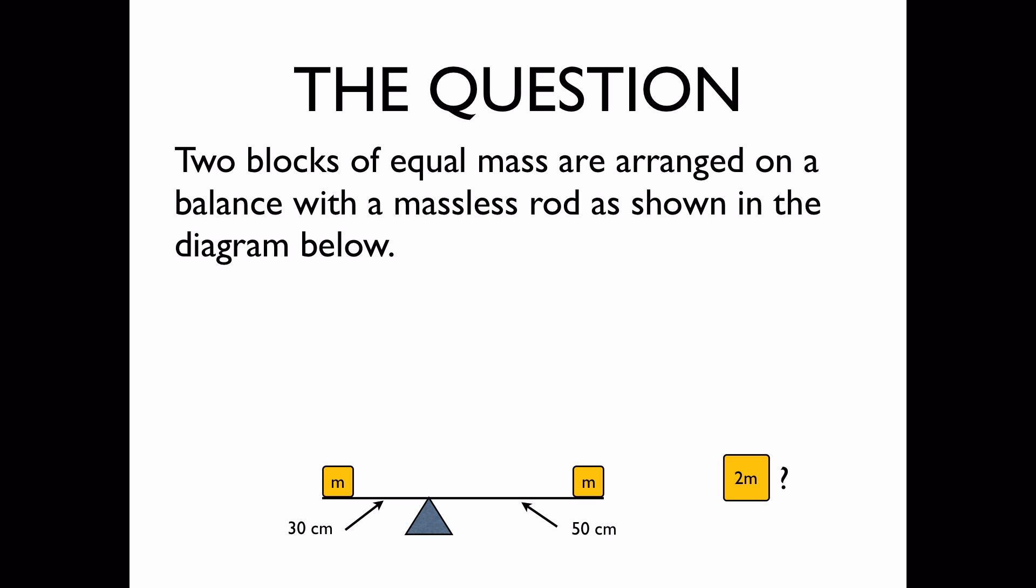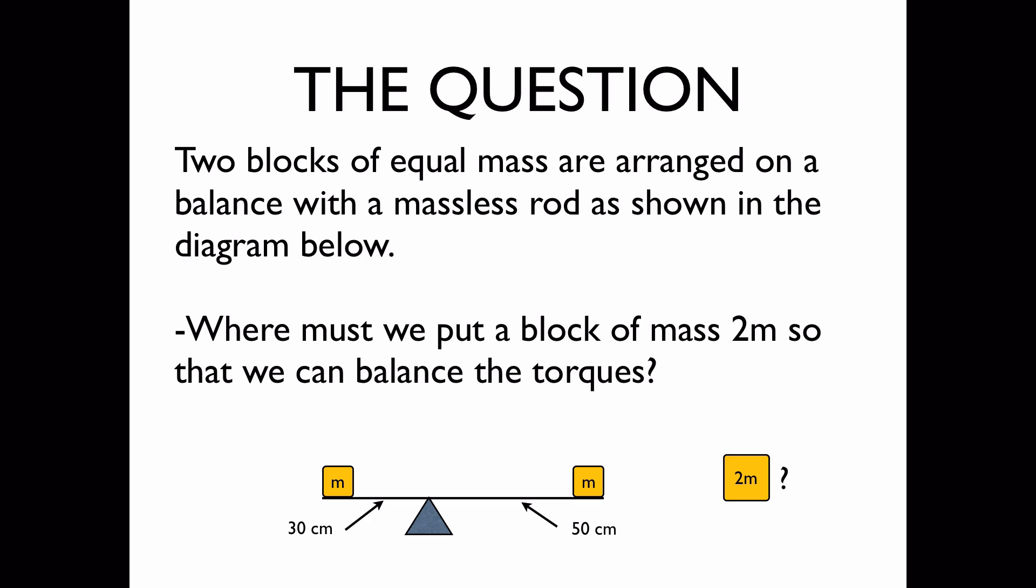Two blocks of equal mass are arranged on a balance with a massless rod as shown in the diagram below. We'd like to know, where must we put a block of mass 2m so that we can balance the torques and prevent the balance from rotating?